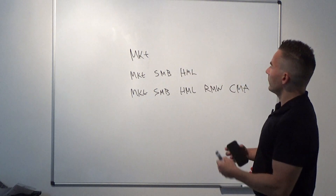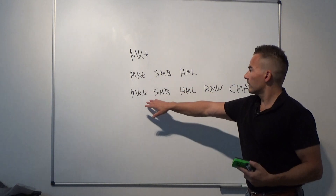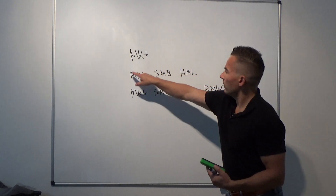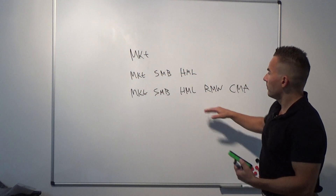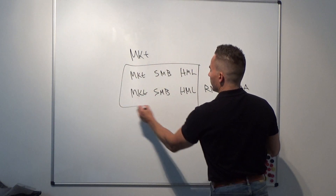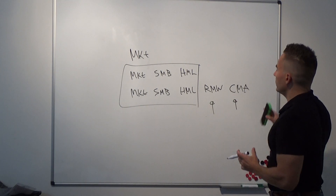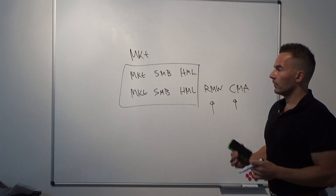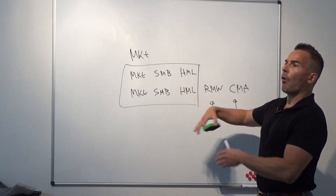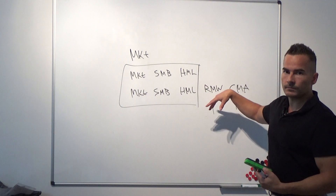If we compare the three-factor model against the five-factor model, we can say the three-factor model nests in the five-factor model because it contains the same variables but the five-factor model has two more. If we delete those two extra factors, we end up with the same model. Whenever a model incorporates all the factors of the other model, they are nested.